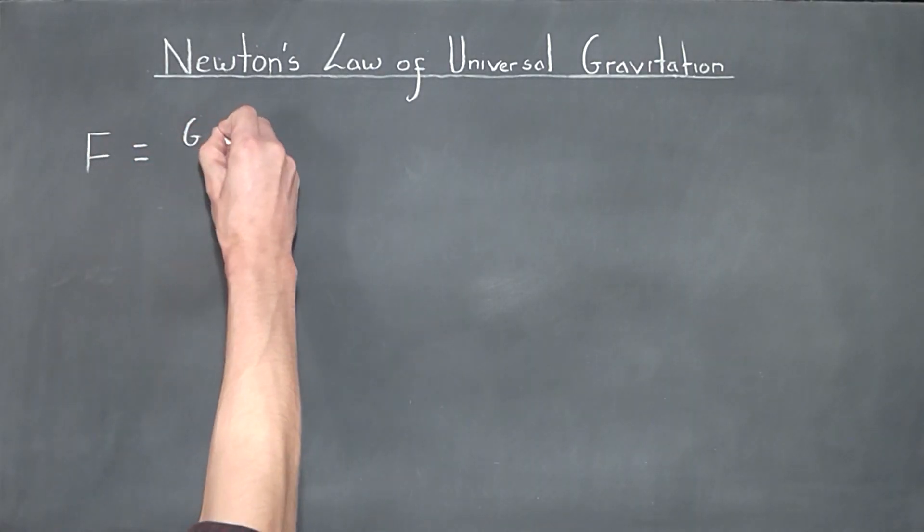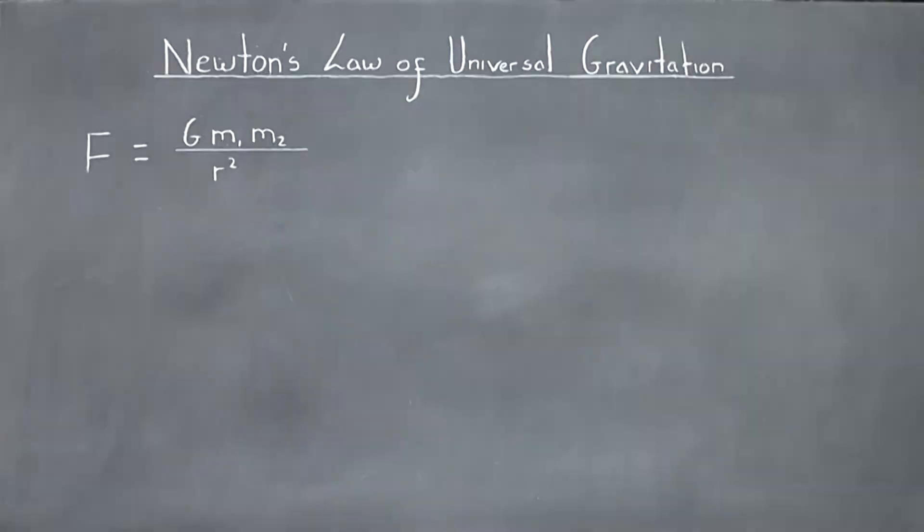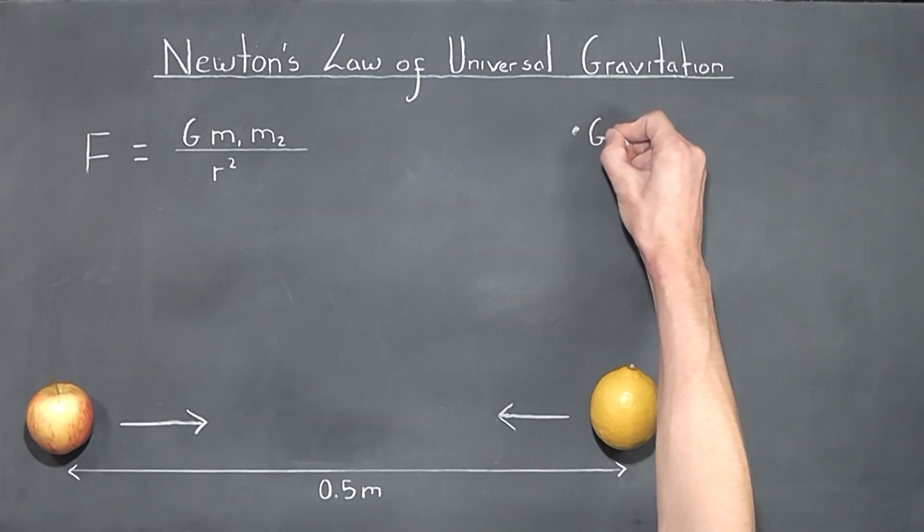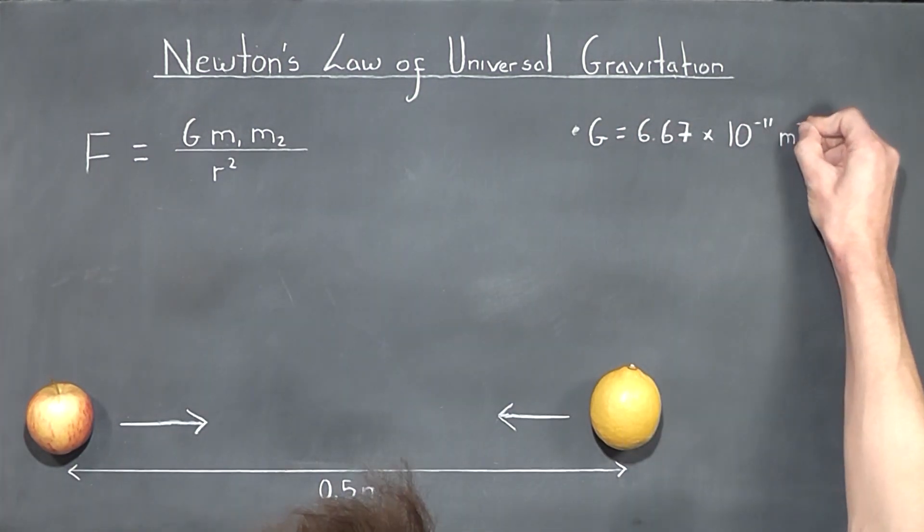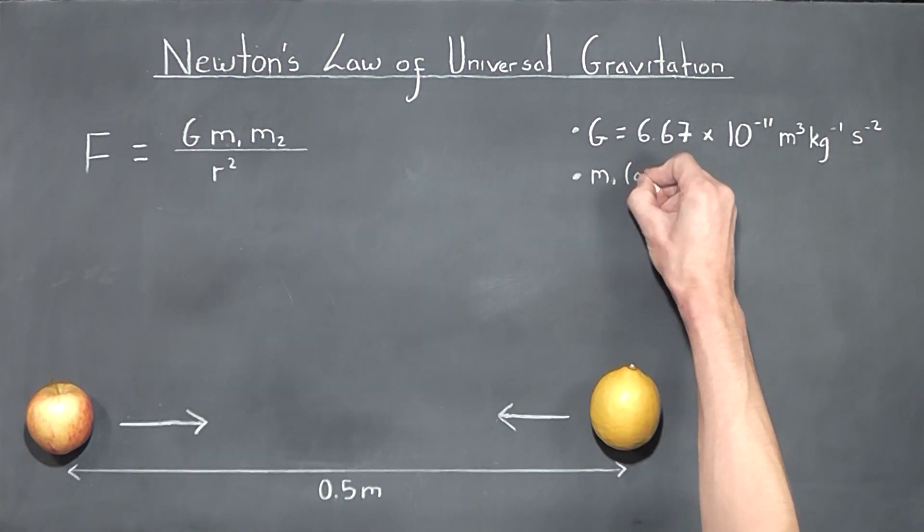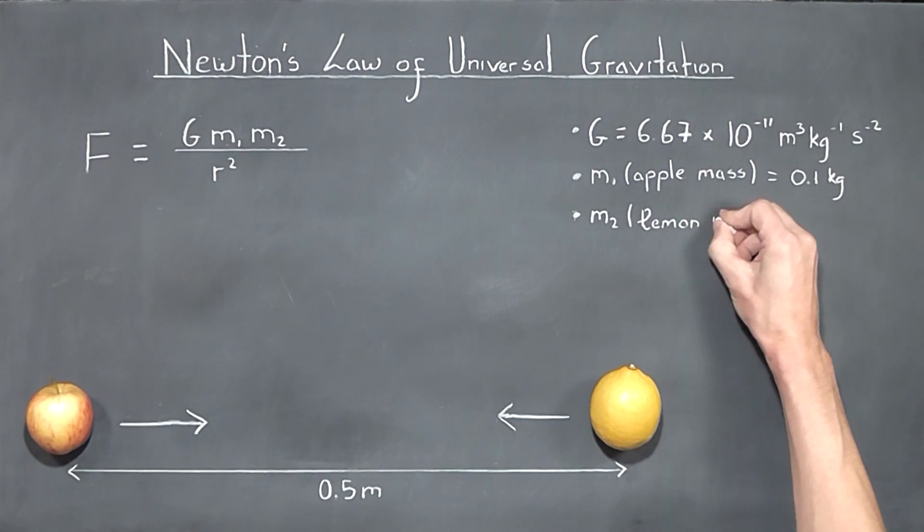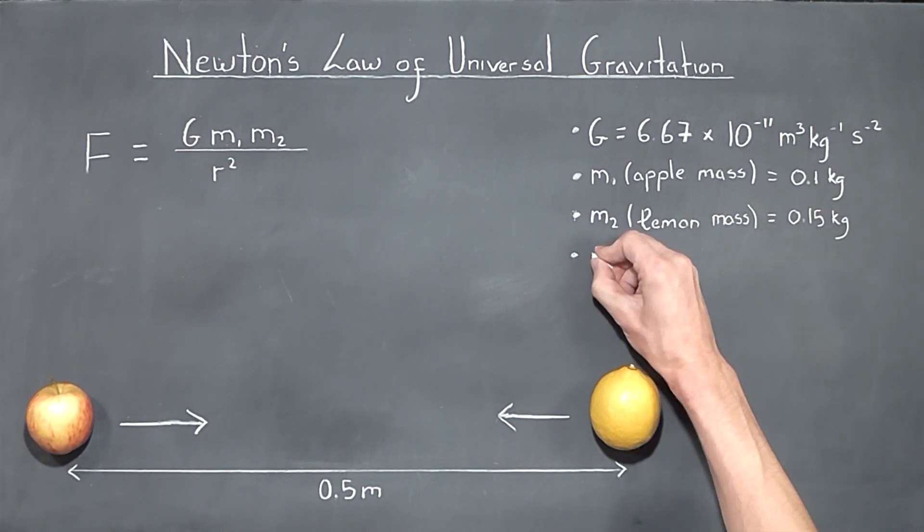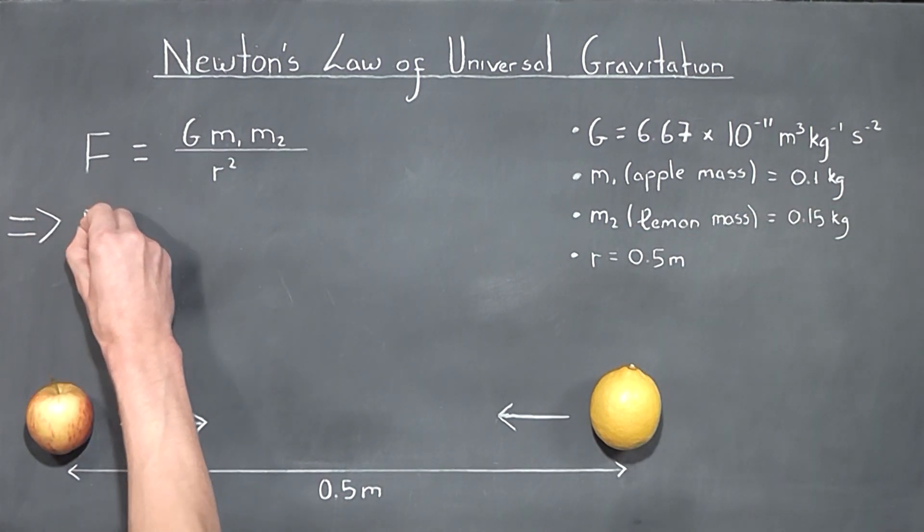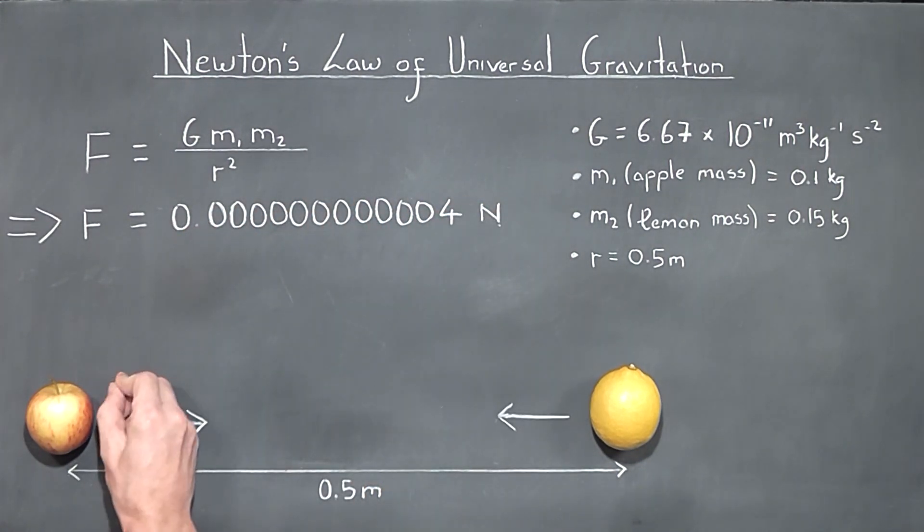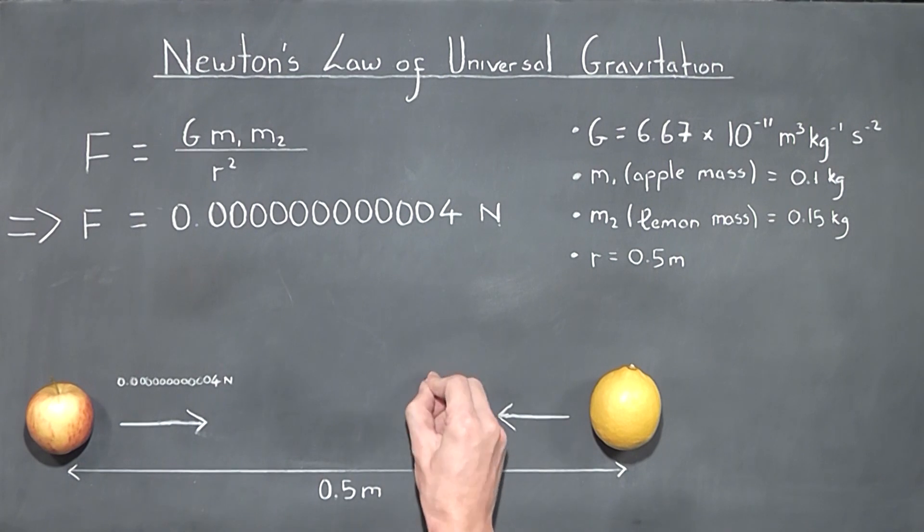The exact details of this equation are less important than its fundamental prediction. This equation tells us that there's a force of gravitational attraction between every two objects in the universe. Or, put more simply, at this very moment, there's a gravitational pull between this apple and this lemon. In all your years of observing fruit, have you ever been given reason to suspect that there's a gravitational pull between apples and lemons?